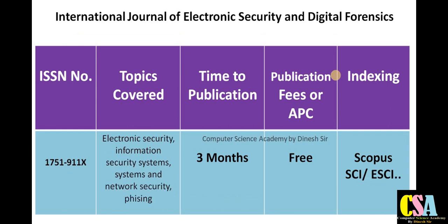Next is the International Journal of Electronics Security and Digital Forensics — a rapid publication Scopus and SCI-indexed journal with a maximum publication time of three months. Topics covered include electronic security, information security, network security, phishing, digital forensics, cybercrime, and cyber attacks. There is no issue with indexing and no publication charges — it is free of cost.